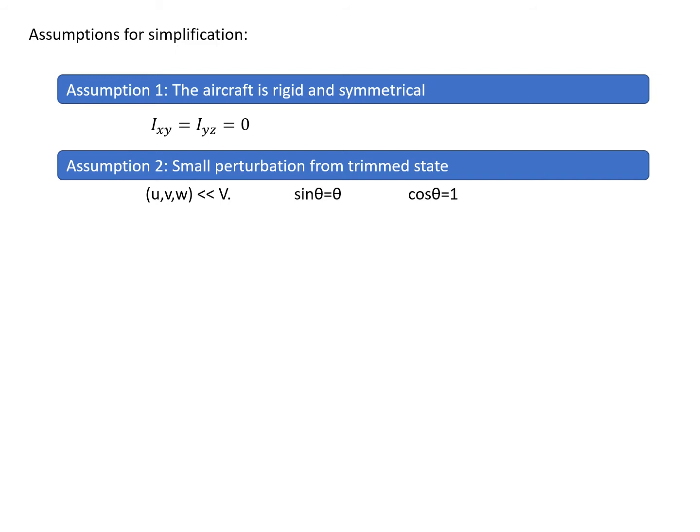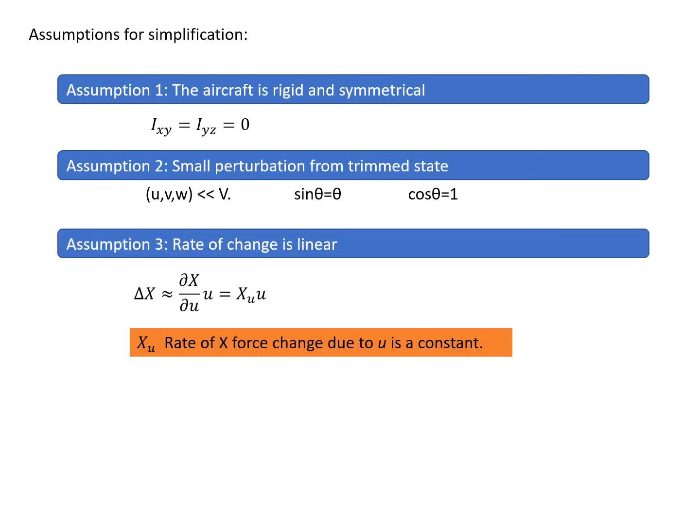The second assumption means that the velocity disturbances U, V, W are far less than the true airspeed. Since the velocity disturbances are small, the angle disturbances are also small. If the angle is small, sine(θ) is roughly θ — note that θ is in radians, not degrees. When θ is small, cosine(θ) is approximately one. The third assumption is that the rate of change is linear. For example, a change in X force ΔX can be expressed as ΔX = Xu · u.